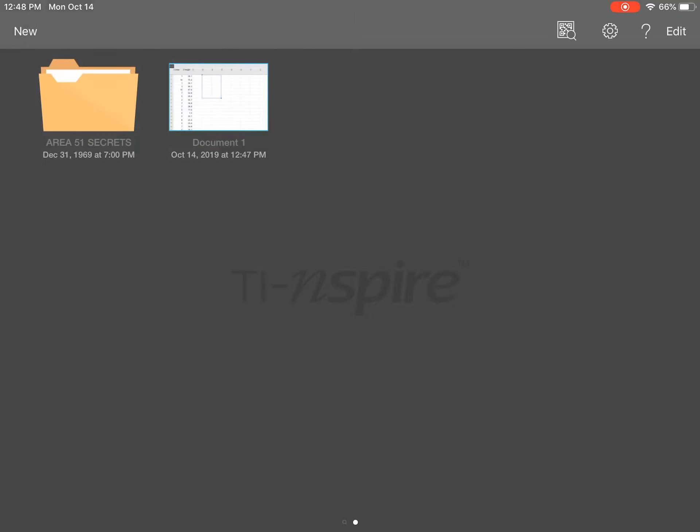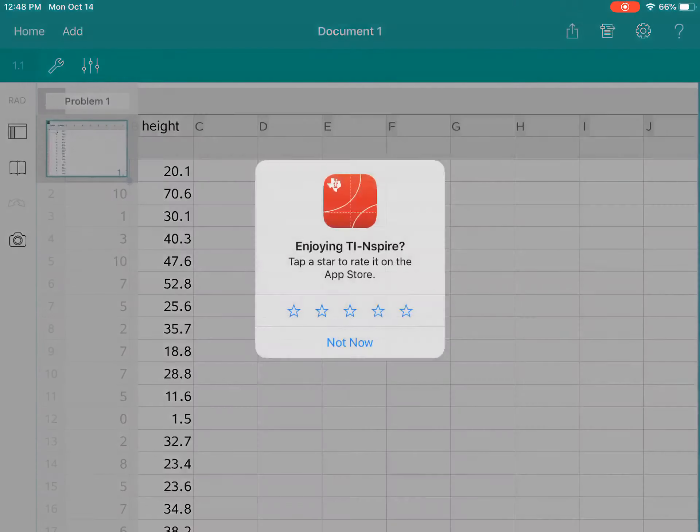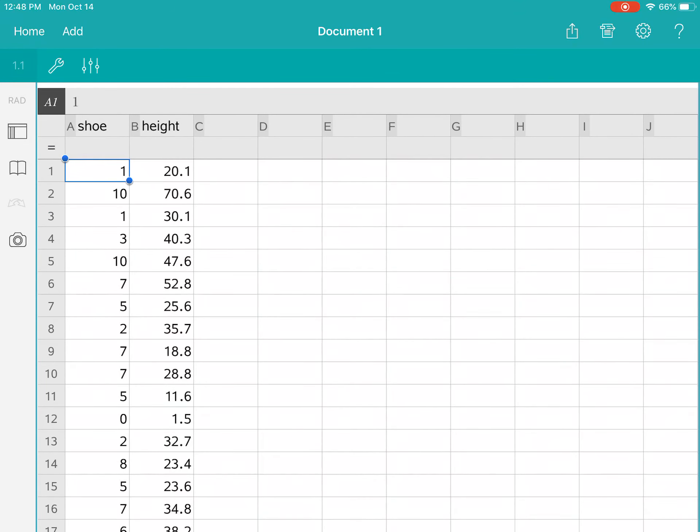Just to save some time, I've already got it typed in. When you do this, make sure you type above the data what each one represents, like labels. So my X is labeled as shoe and my Y is labeled as height, that way you know which is which when you go to your linear regression.